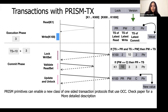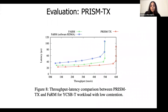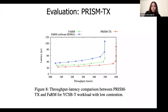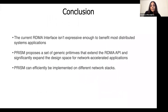We compared PRISM-TX with our implementation of the FARM protocol, using both hardware and software RDMA implementations for FARM. PRISM-TX outperforms FARM in both throughput and latency. With lower message complexity enabled by PRISM primitives, PRISM-TX is about 5 microseconds faster than FARM and reaches about a million more transactions per second before saturating the network. To conclude, PRISM significantly expands the design space for RDMA-based applications by offering a middle ground between the restrictive RDMA read-write interface and the full generality of RPC communication.